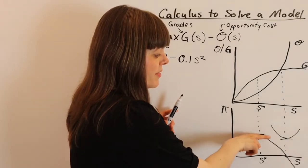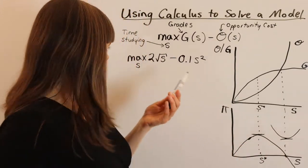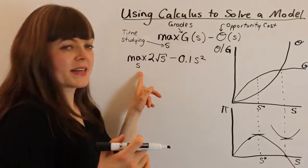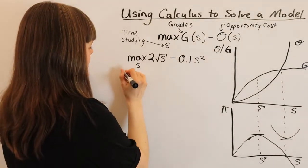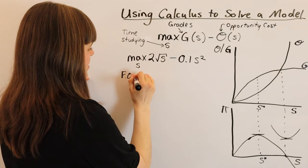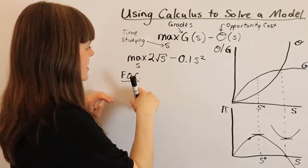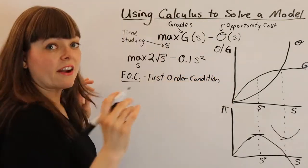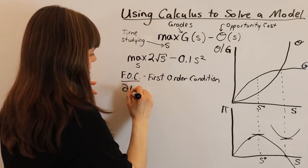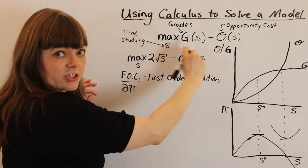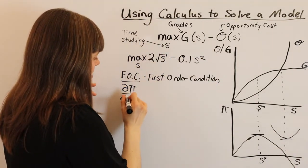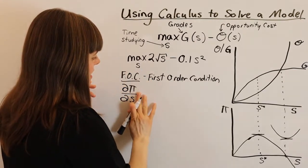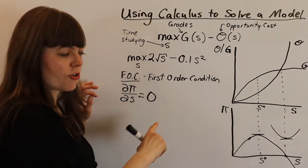How do we find the slope of the tangent? We take a derivative - that's all we have to do, is take the first derivative with respect to s of the function. That's going to be our first order condition, which is usually just FOC in economics, meaning first order condition. Our first order condition says the derivative of the payoff function, our entire objective function, with respect to our choice variable - in this case time spent studying - is equal to 0. If we can find the value for s where this is true, then we have a candidate for a maximum.